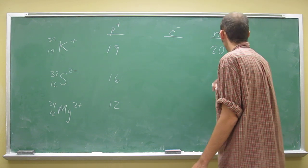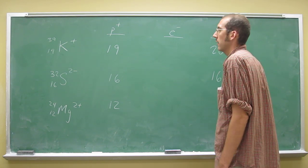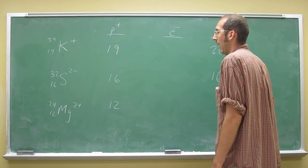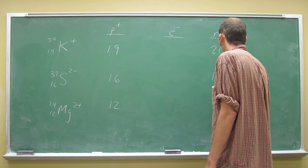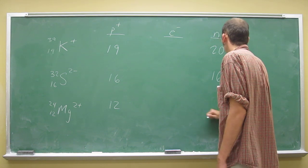32 minus 16 is 16, and 24 minus 12 is—sorry—12.